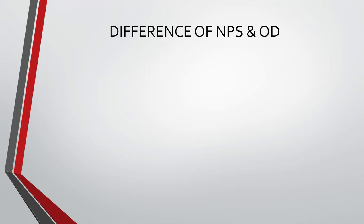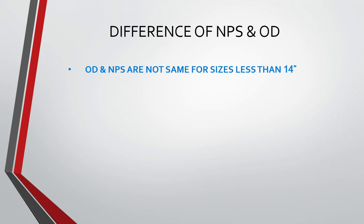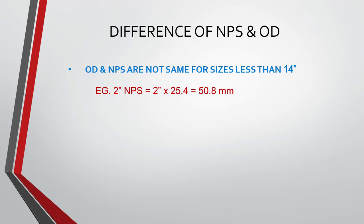Is there any difference between NPS and OD? Yes, there is a difference. For sizes less than 14 inches — starting from half inch up to 12 inch — OD and NPS are not the same. For example, a 2 inch pipe, if you convert to metric units, would be 50.8 mm. But the actual OD of a 2 inch pipe available in the market is 60.33 mm. That is why OD and NPS are not the same for sizes less than 14 inches.